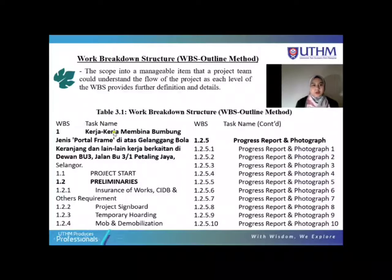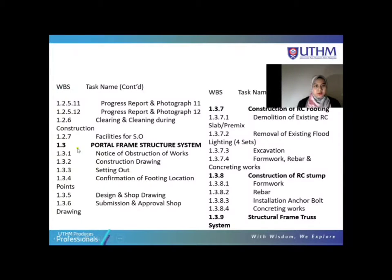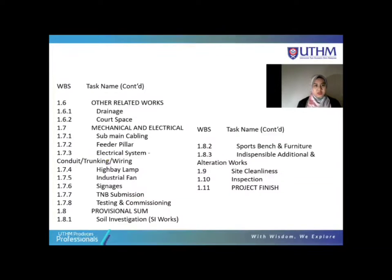This is our WBS structure that consists of four levels. The first level is the scope, the second level is the preliminary, and the third level consists of the photo frame structure, roofing and welding, other related works, and provisional sum. The fourth level goes straight to the project finish or handover of the project.